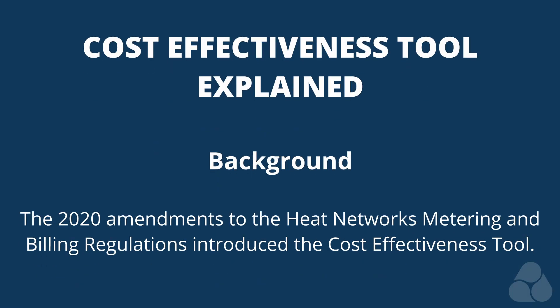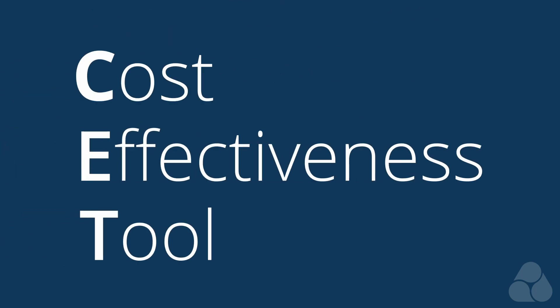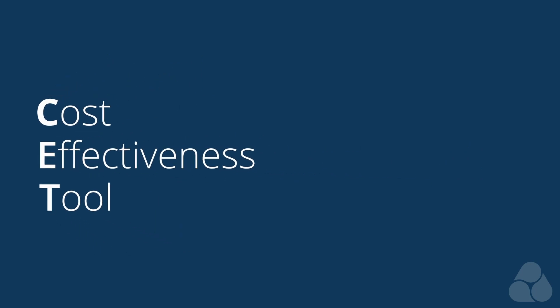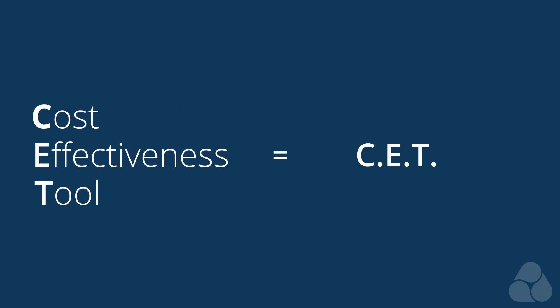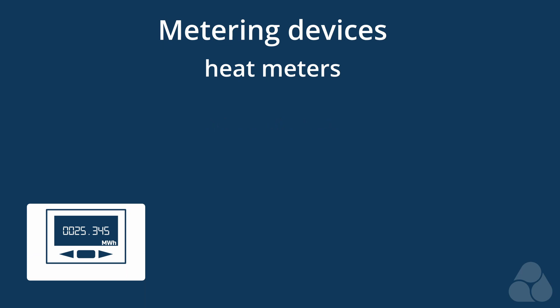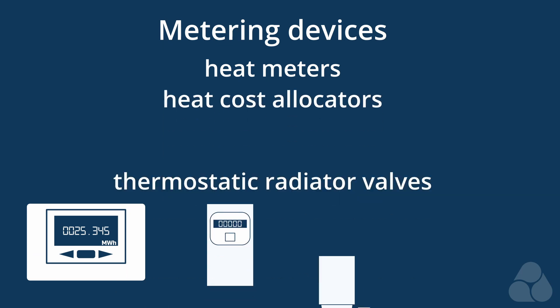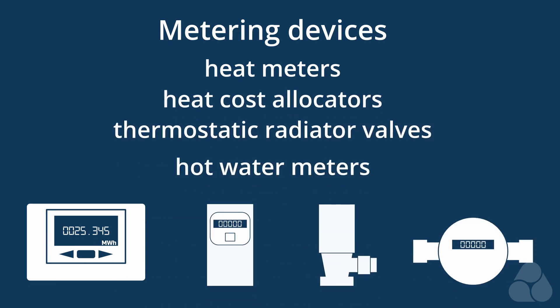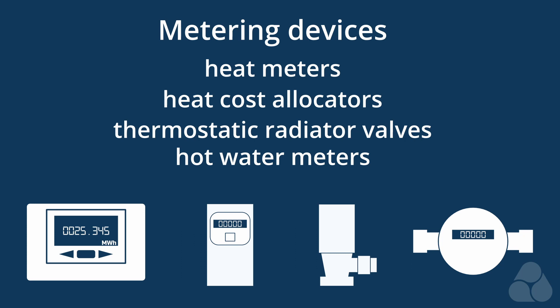The 2020 Amendments to the Heat Network's Metering and Billing Regulations introduced the Cost-Effectiveness Tool. For the sake of convenience, we'll be referring to the Cost-Effectiveness Tool as the CET throughout this video. The CET is a Microsoft Excel format tool created for heat suppliers to assess whether metering devices — such as heat meters, heat cost allocators, thermostatic radiator valves, and hot water meters — should be installed in each open-class building that falls within the definition of a communal or district heating network.